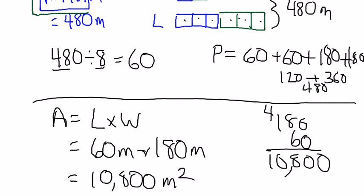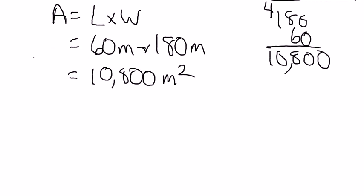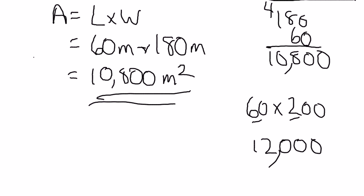So, estimating the check, I want to estimate, I'm going to call this 60 times 200. 6 times 2 is 12. 1, 2, 3 zeros should be about 12,000. I'm less than that, so I'm good to go. And that is today's lesson. Thank you.